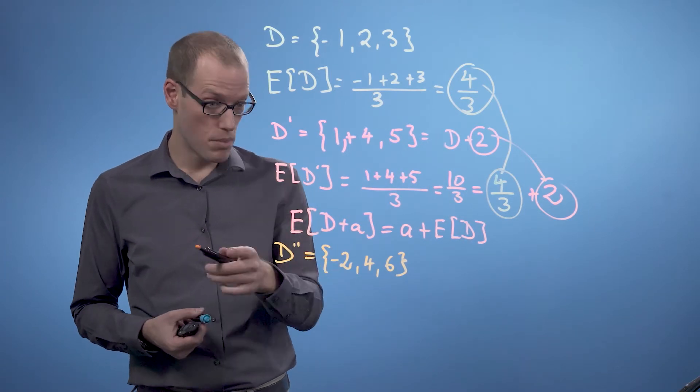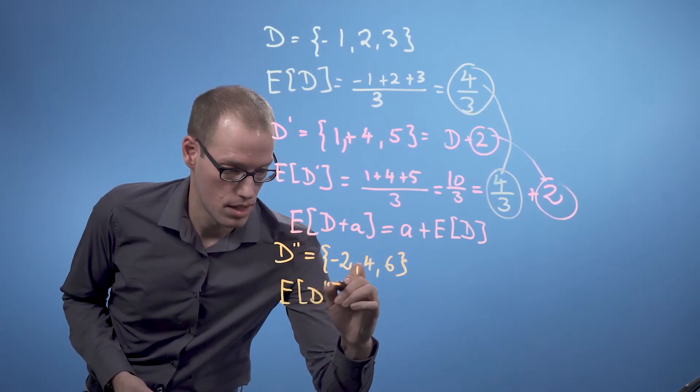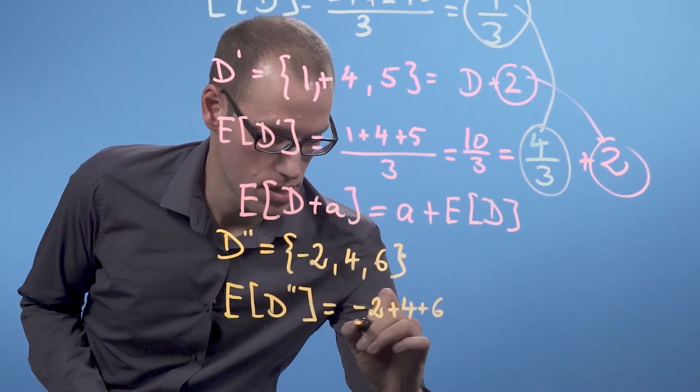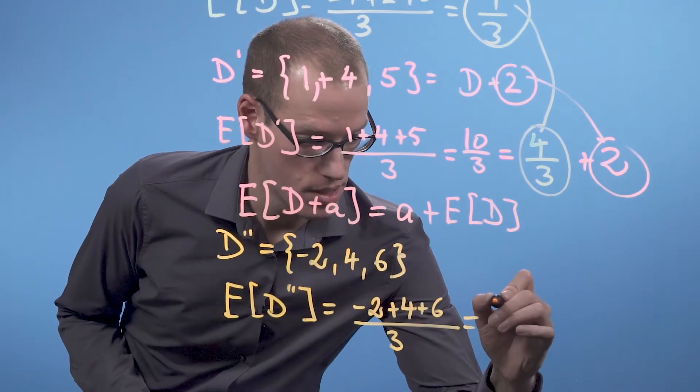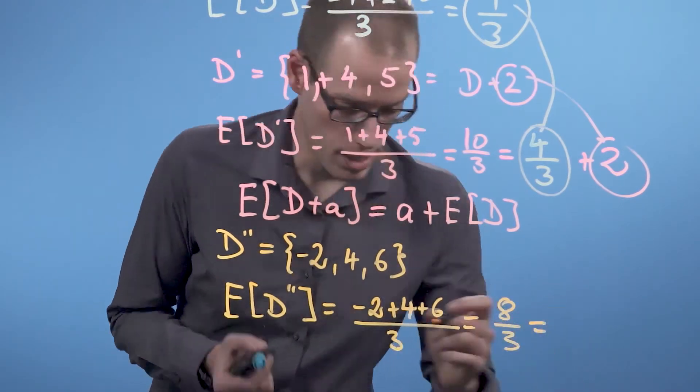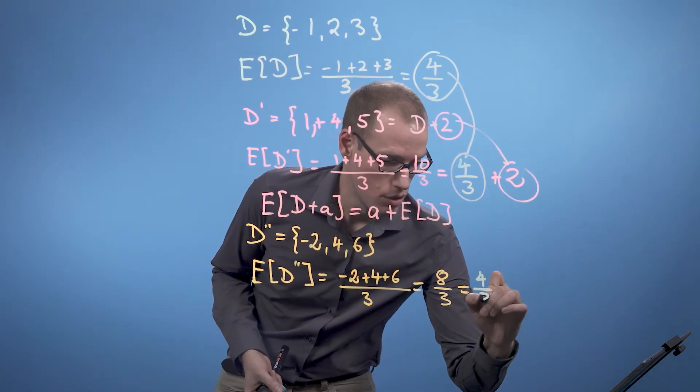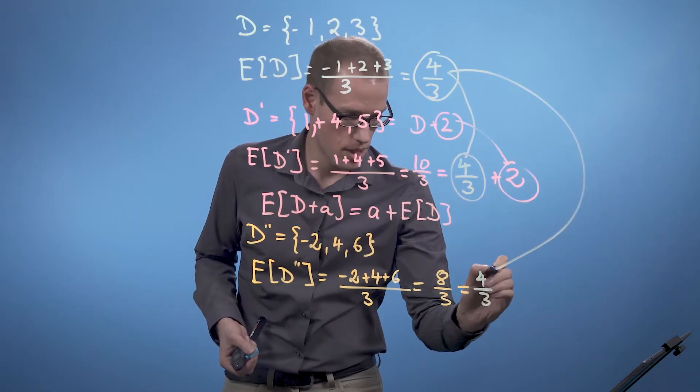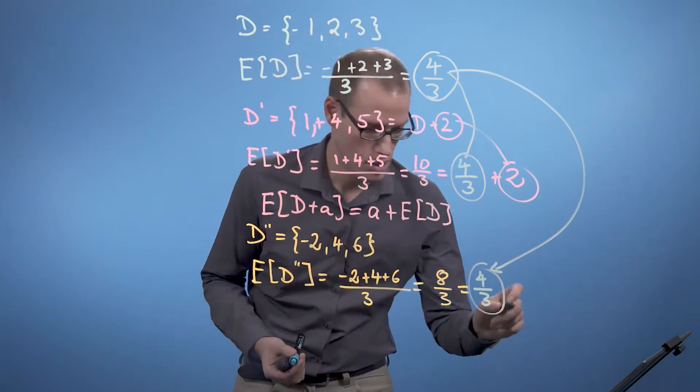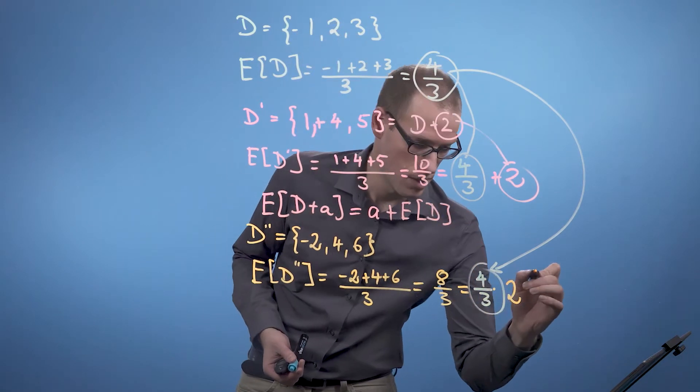If we now compute the mean of D' then we end up with minus 2 plus 4 plus 6 divided by 3 which is 8 over 3. We can rewrite that again in a convenient way, which is 4 over 3, which again comes from here, times 2, which is the scaling factor.